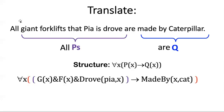This is an all Ps are Q structure. It's just that the antecedent, the P part is much more complex. Instead of saying all dogs have a certain property, it's saying all giant forklifts that Pia drove have a certain property. And instead of going to heaven, it's being made by a caterpillar.